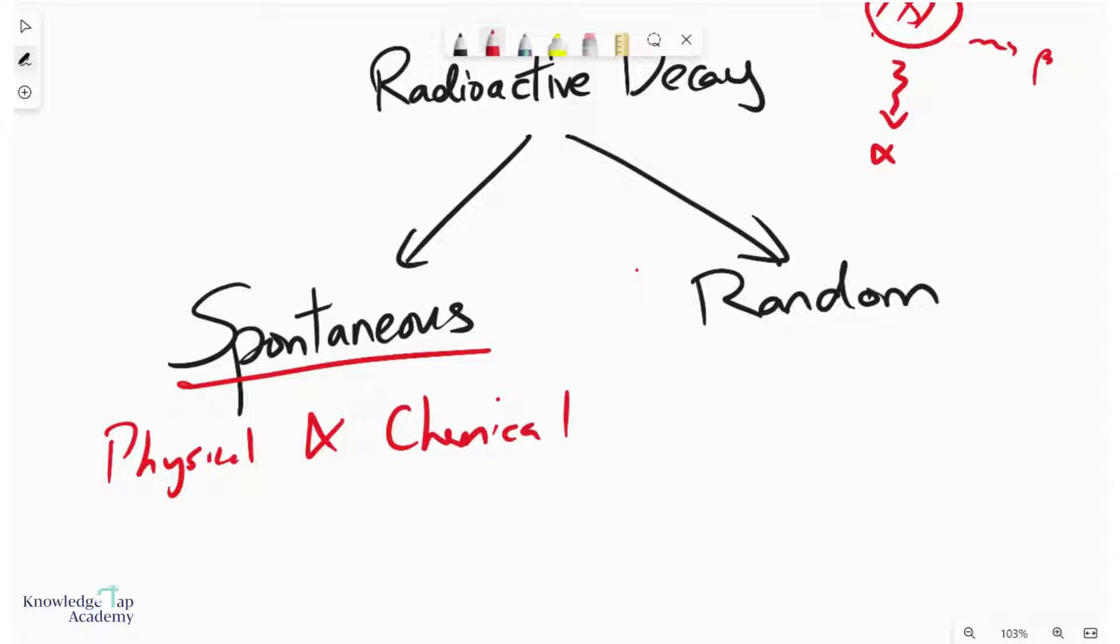If you have a radioactive nucleus like uranium, whether you placed it in the sun or on the moon—two very contrasting physical environments—the radioactive decay process would be entirely the same. Similarly, chemical conditions don't matter. If the uranium was on its own or bonded with oxygen, the uranium nucleus would still decay in the very same way.